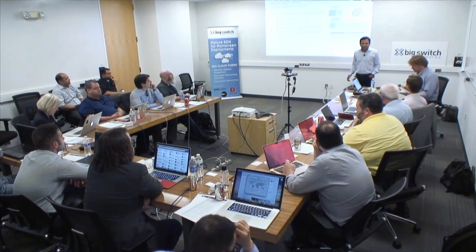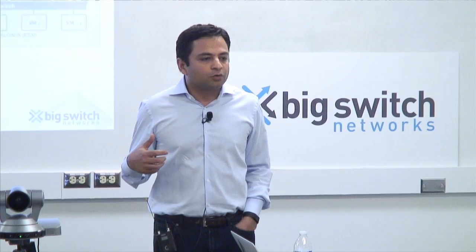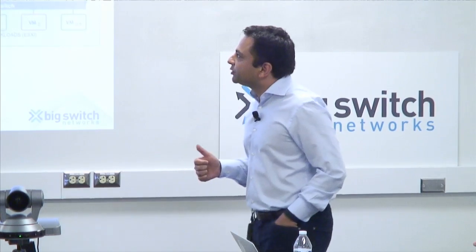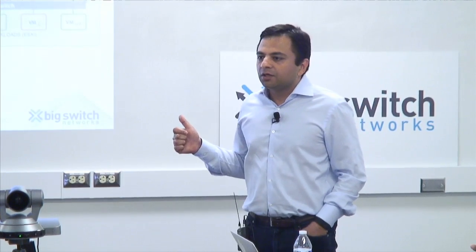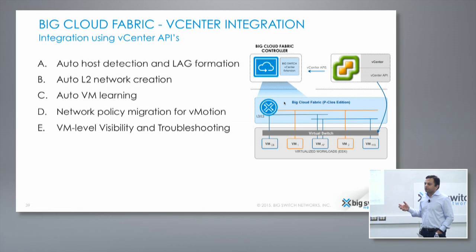Hi everyone. I'm the Senior Systems Engineer here, and the plan is to give you a quick demo on how we do integration with VMware. We essentially do the integration through vCenter — we register with vCenter and then we get all the intelligence around when a VMware administrator creates a network. We go ahead and understand that a VLAN or network has been created, and we dynamically provision the top-of-rack switches accordingly.